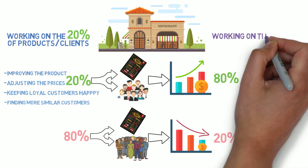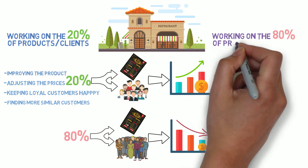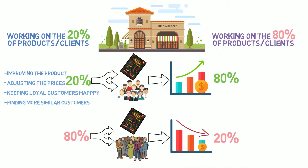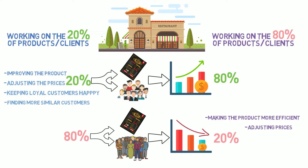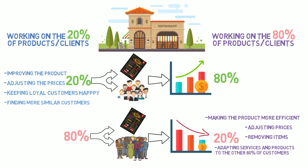On the other hand, we can work on the 80% of the products that are not very in demand, working towards making them more efficient and attractive, or simply removing them. Also, putting effort into adapting our services for the 80% of the customers that only represent 20% of our revenue.